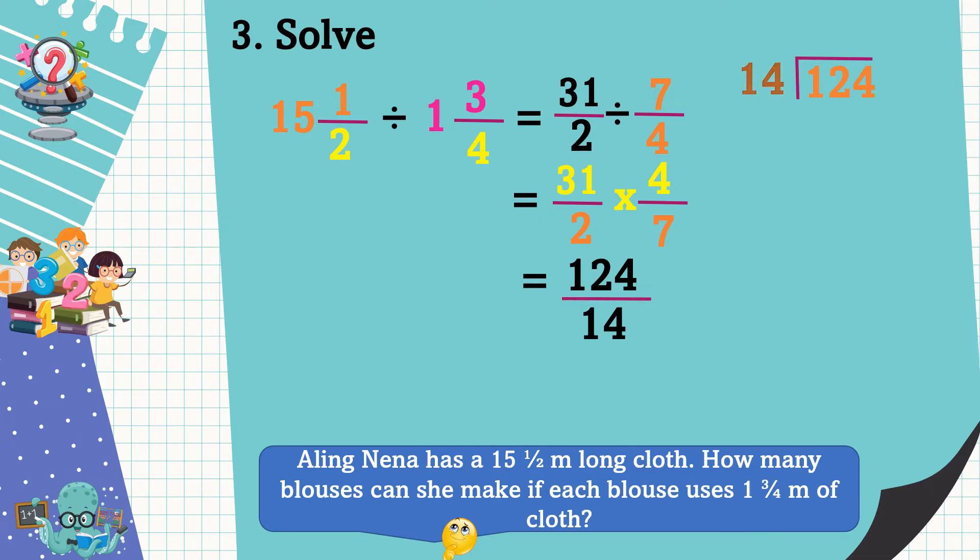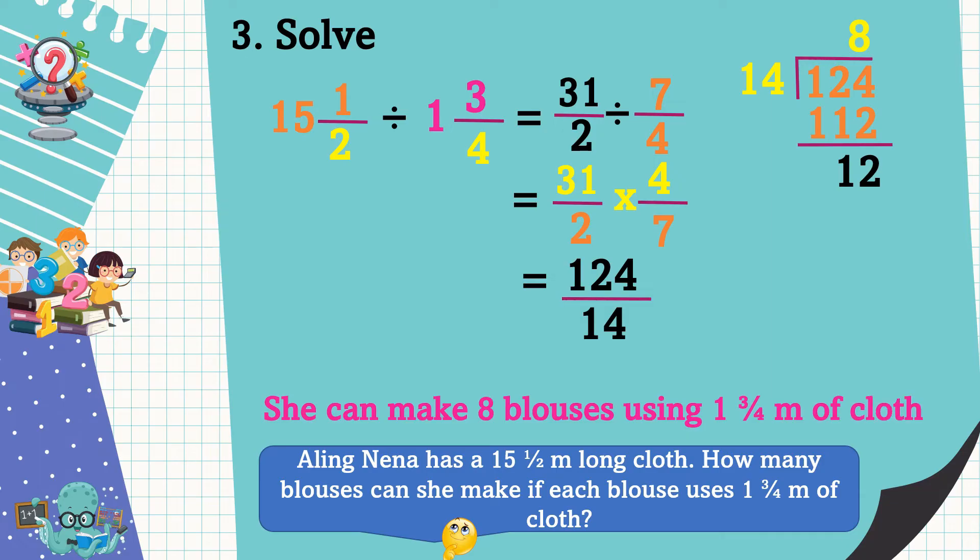124 divided by 14. And the answer is equal to 8. 8 times 14 is equal to 112. 124 minus 112 is equal to 12. We have a remainder of 12. Since the question is how many blouses can she make if each blouse uses 1 and 3/4 meters of cloth, then our answer is a whole number. Therefore, she can make 8 blouses using 1 and 3/4 meters of cloth.